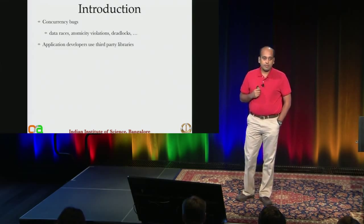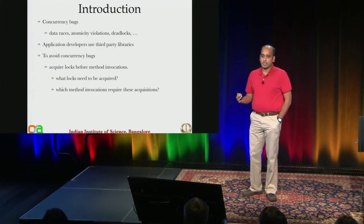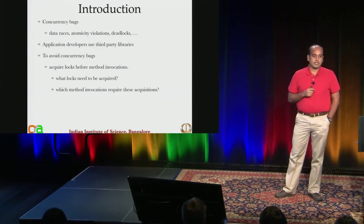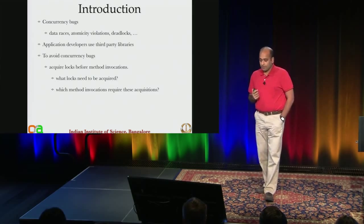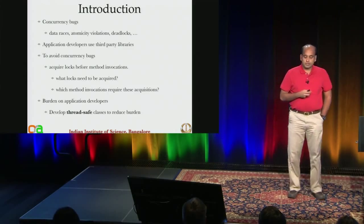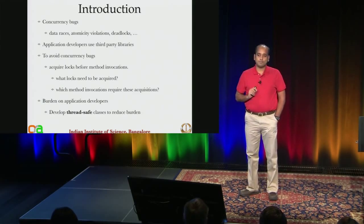Application developers use third-party libraries to increase productivity and build reliable applications. But when building a multithreaded application using a third-party library, one can avoid introducing concurrency bugs by acquiring locks before invoking methods. However, we need to know what locks to acquire and which method invocations require them — placing an unnecessary burden on application developers. One solution is to develop thread-safe classes.